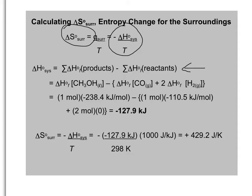We can look up these values in Appendix L. Keep in mind that enthalpies of formation of elements are zero — so here, hydrogen has a value of zero and those terms are dropped from the equation. For methanol, the heat of formation is −238.4 kJ/mol, and for carbon monoxide it is −110.5 kJ/mol. Subtracting those two gives us ΔH_system = −127.9 kJ/mol.